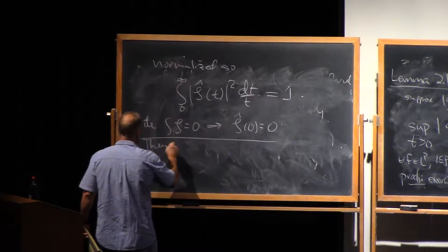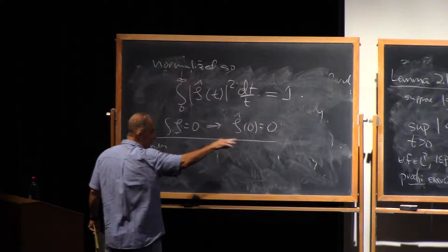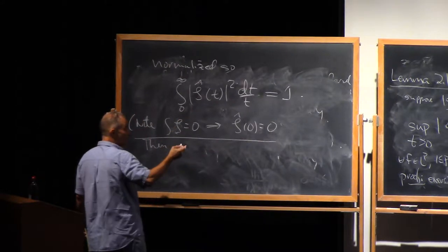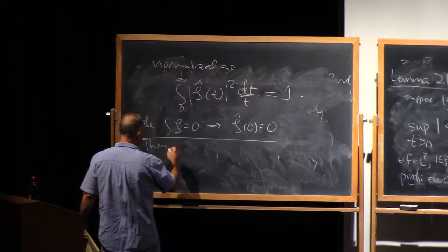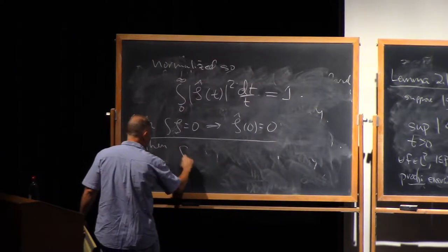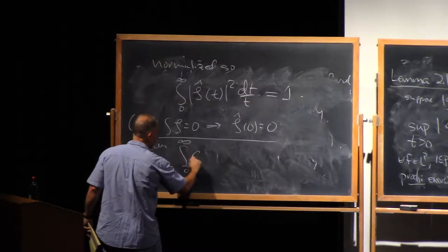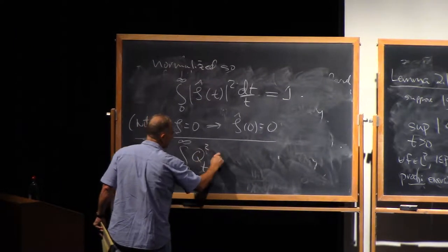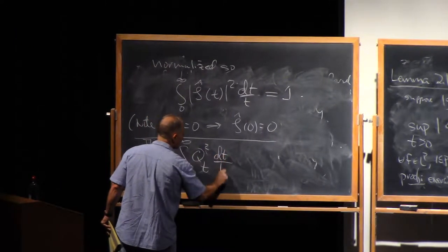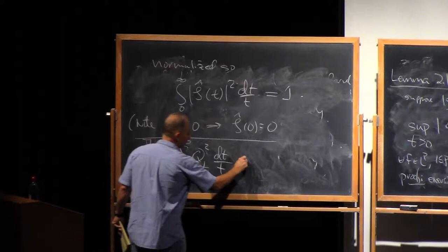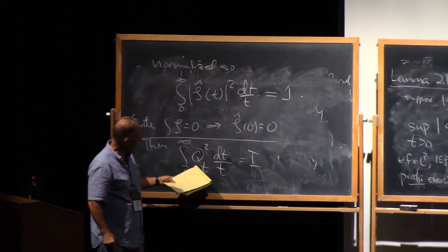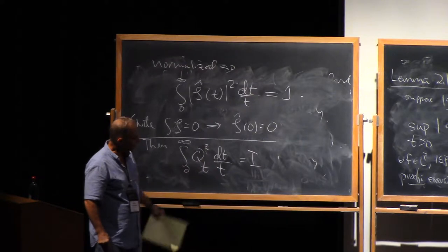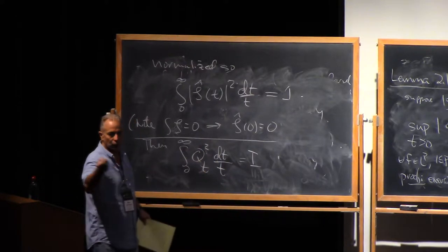So then, in that case, this operator Q_t that we define to be convolution with zeta_t, then Q_t satisfies the so-called Calderon reproducing formula, which is that the integral from zero to infinity of Q_t squared dt over t is the identity operator. In what sense?